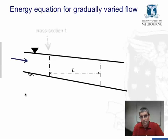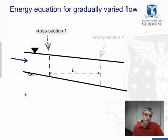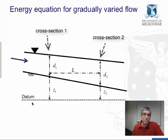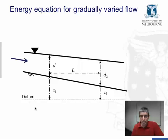Now, we're going to sum the energy terms for cross-section 1 and cross-section 2, and the difference will be effectively the energy loss over this length, L. So let's begin with the potential energy, which is equal to the water depth at the two cross-sections d1 and d2, plus some height above an arbitrary datum. So the potential energy at cross-section 1 is d1 plus z1, and at cross-section 2, it's d2 plus z2.